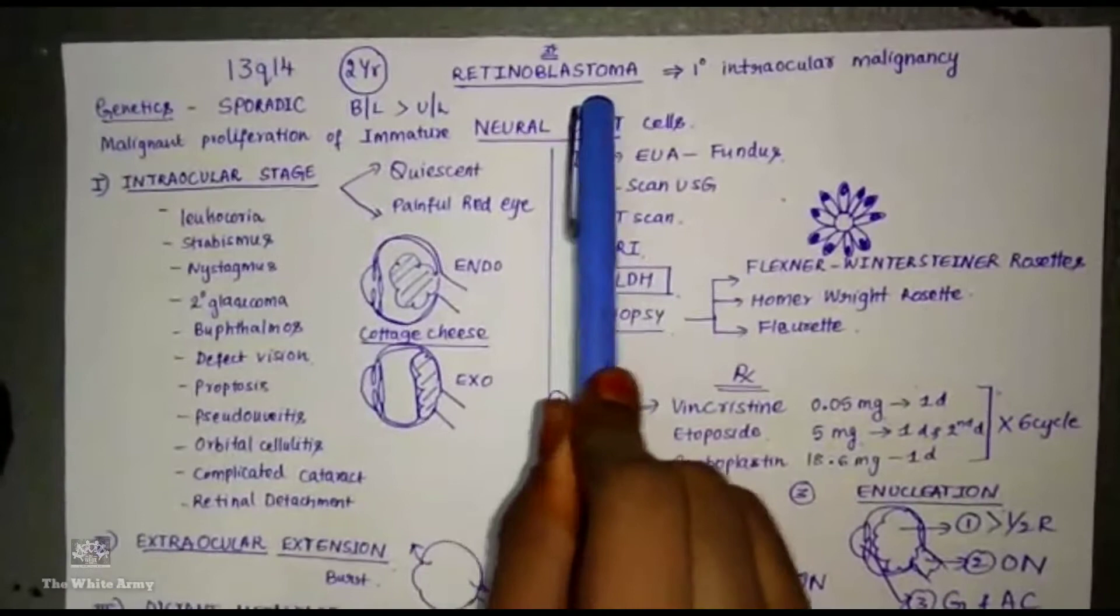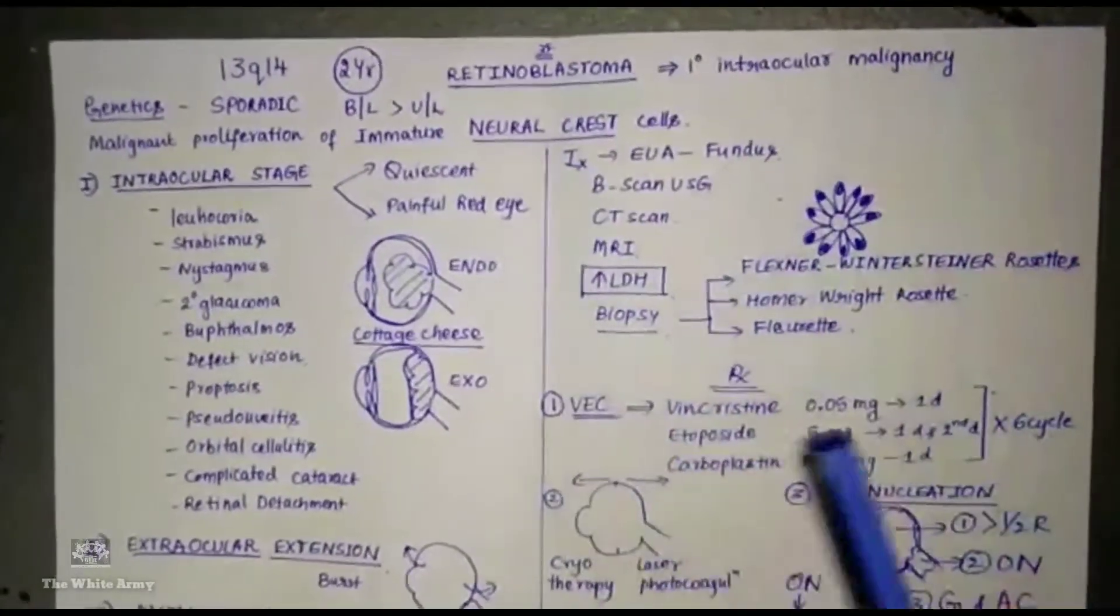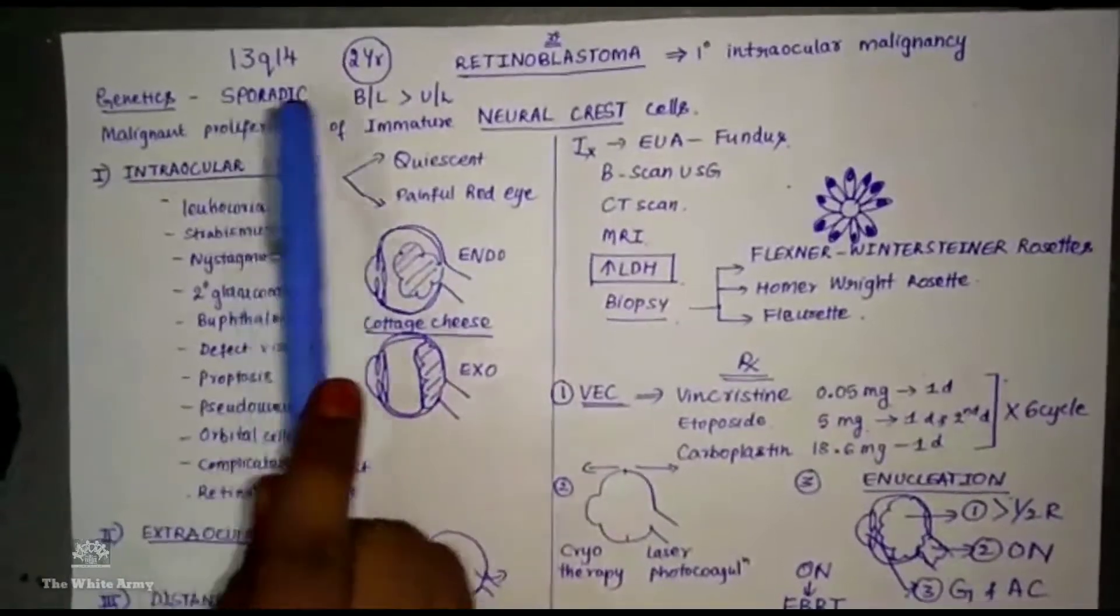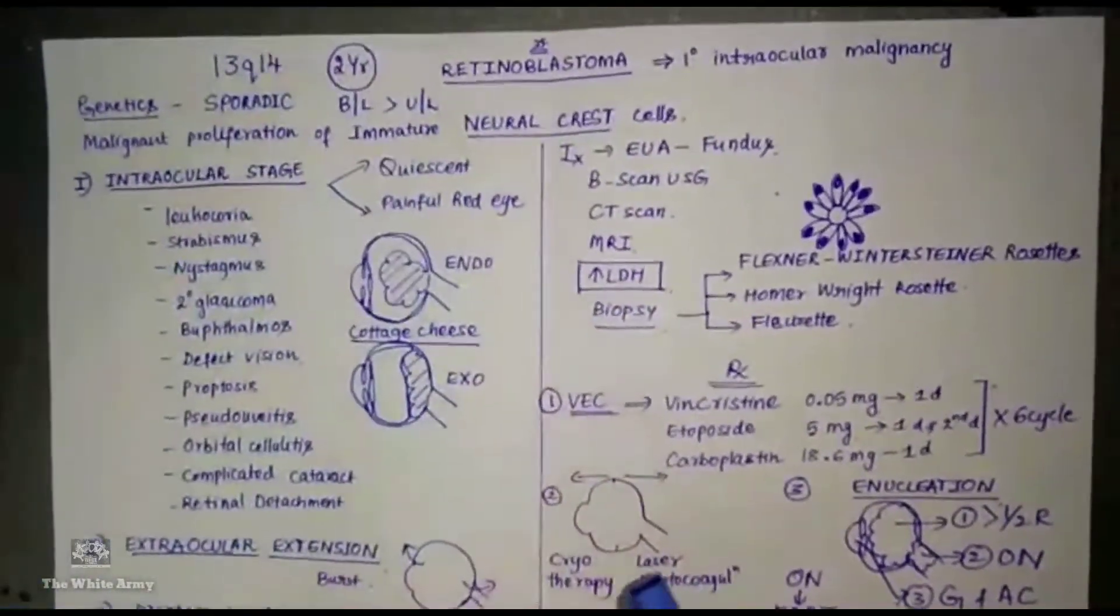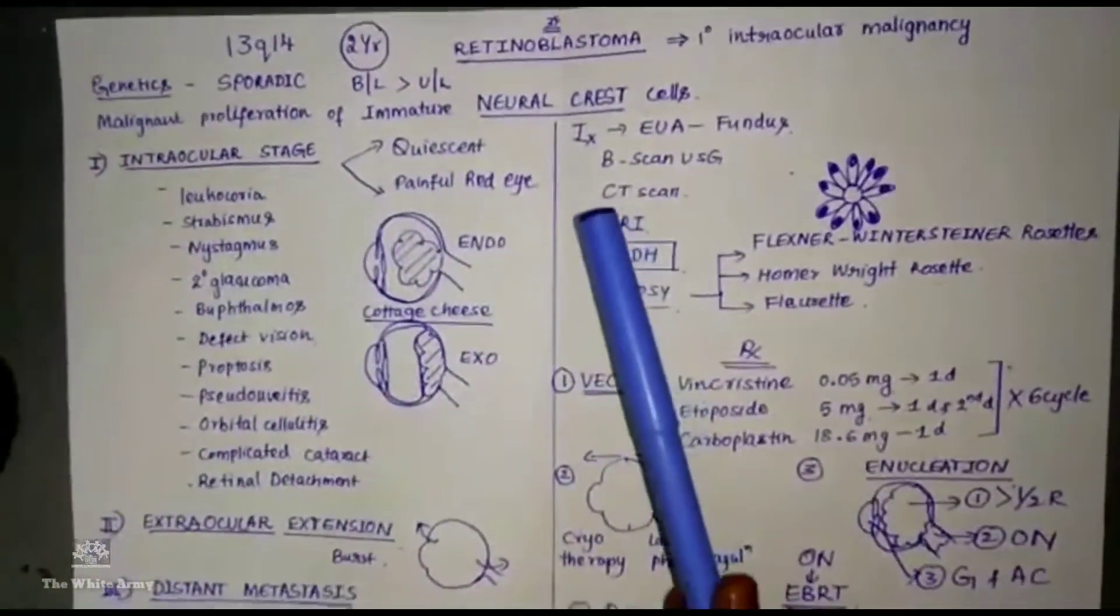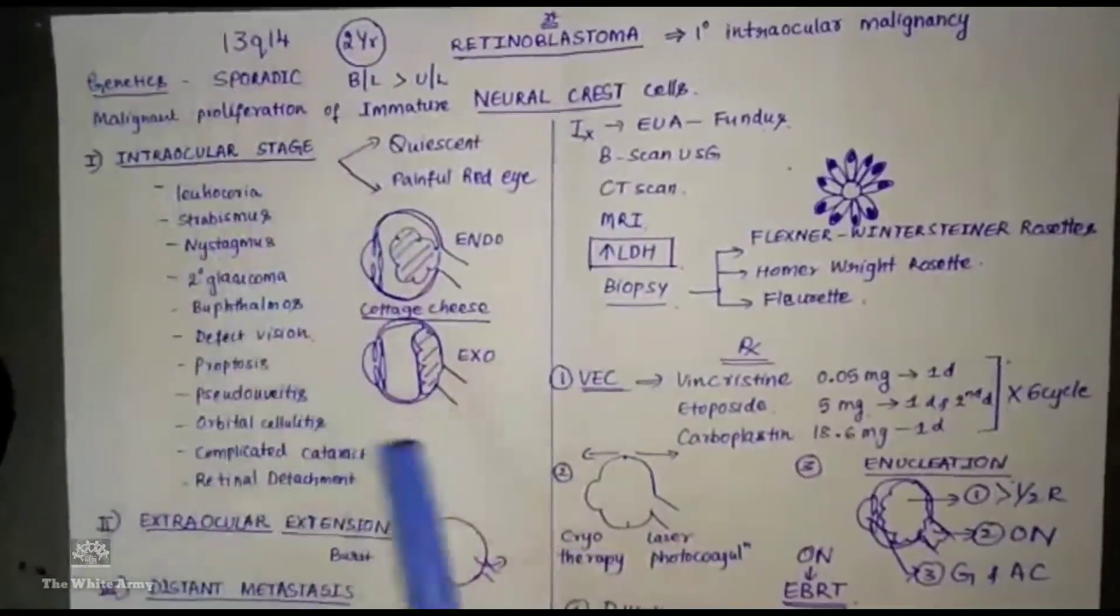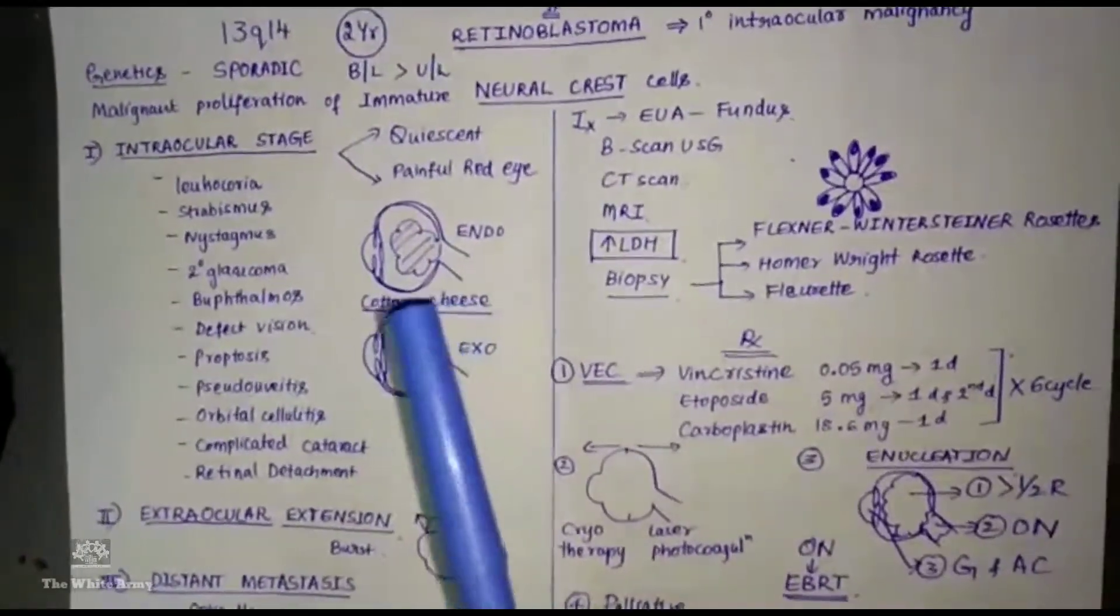Retinoblastoma is a primary intraocular malignancy. It is mostly sporadic and bilateral is more common than unilateral. Retinoblastoma is a tumor which is associated with tumor suppressor gene located on chromosome number 13q14.